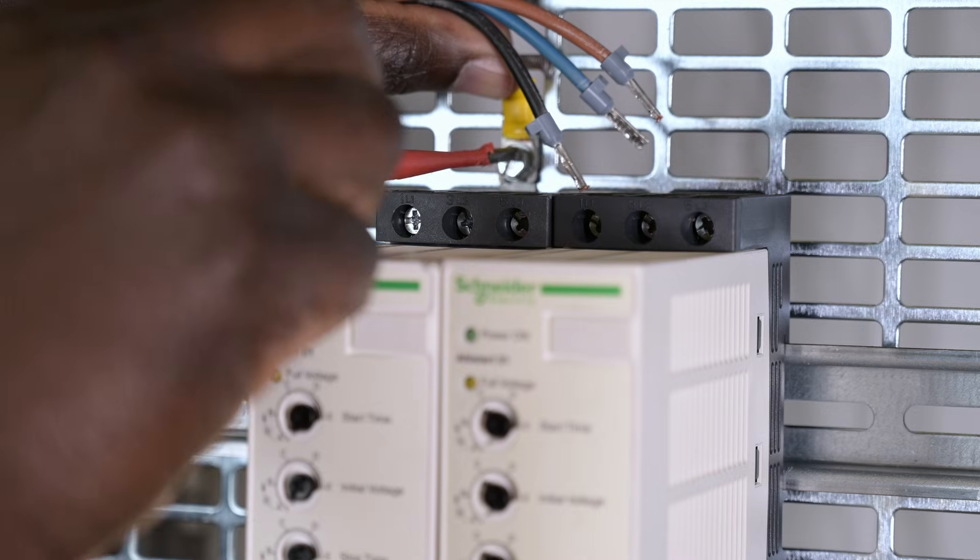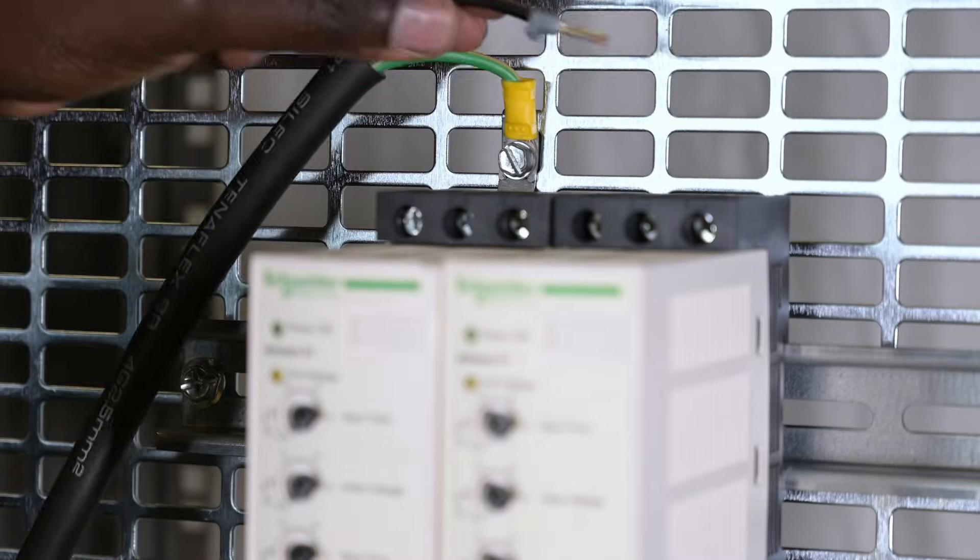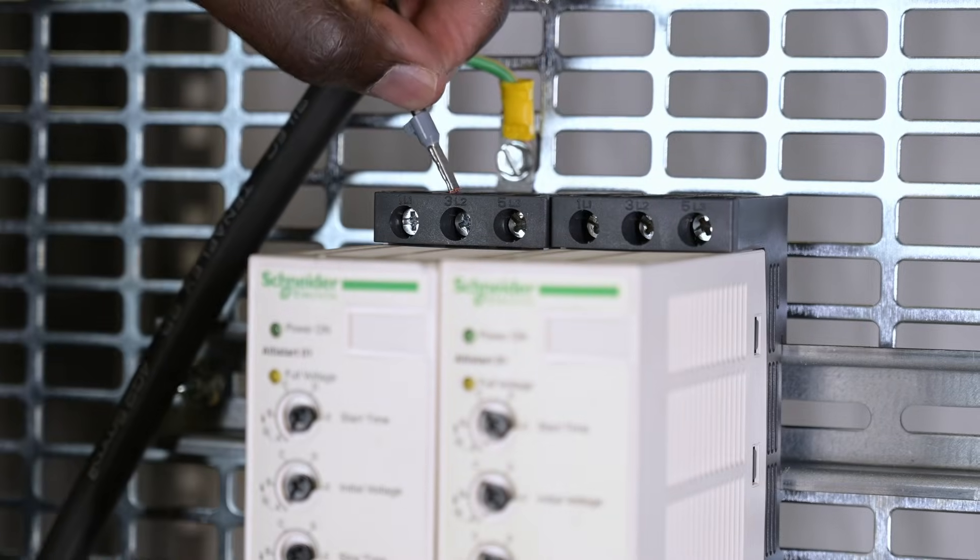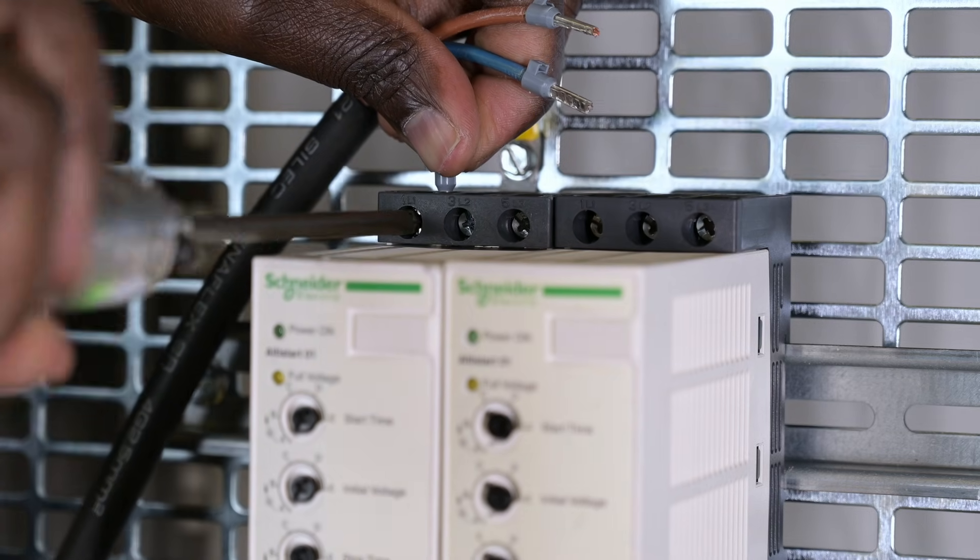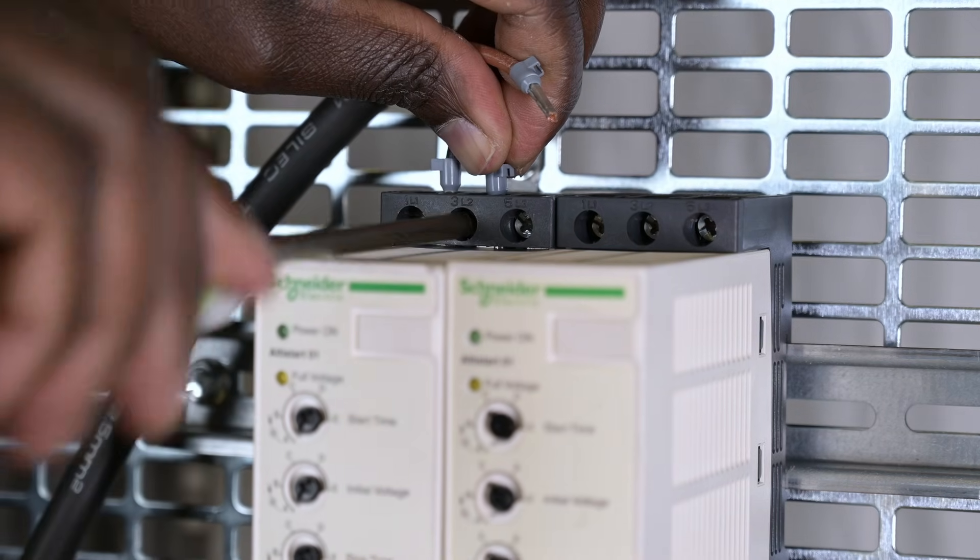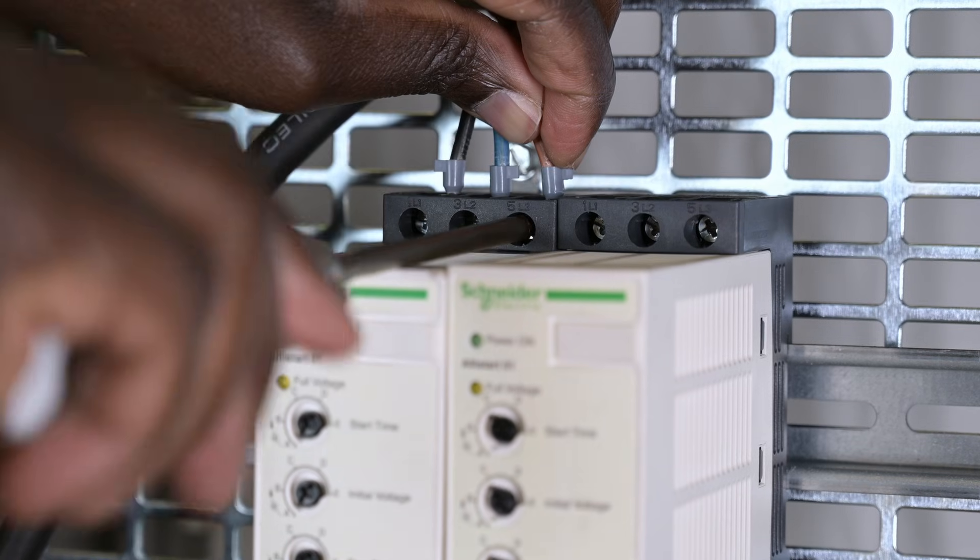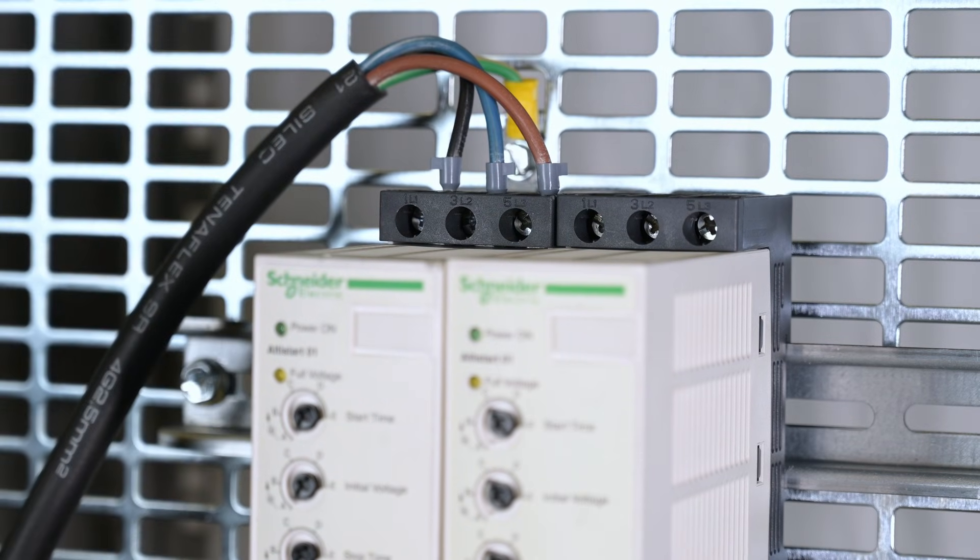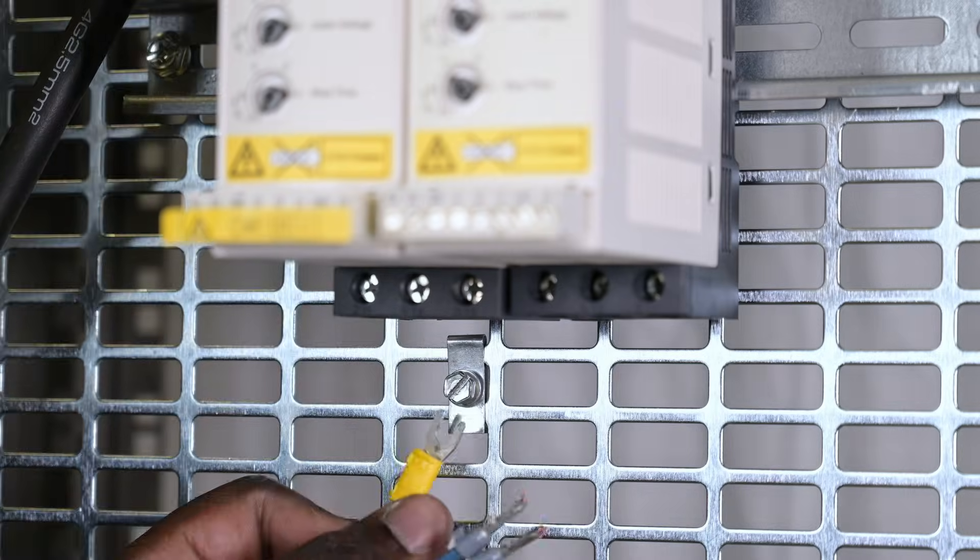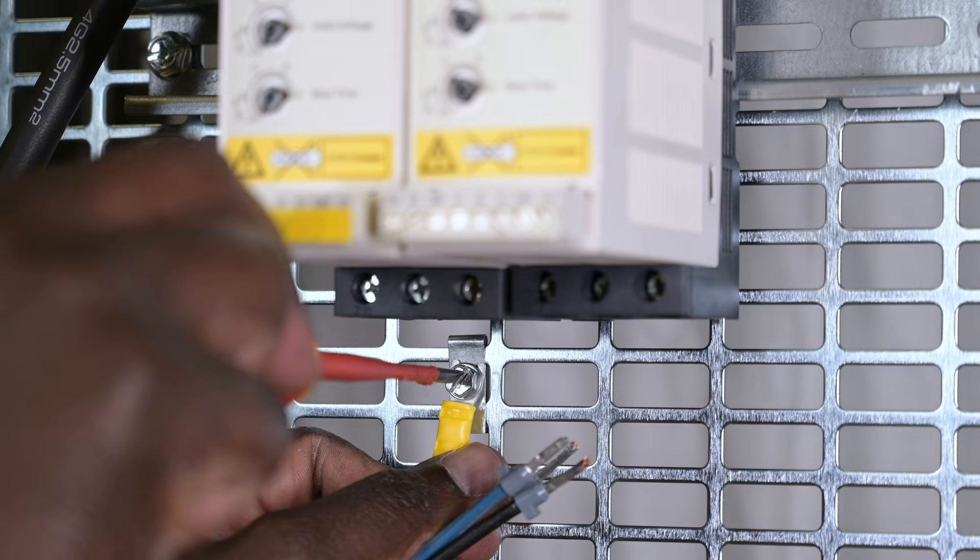The soft starter must be protected against motor short-circuit and overload. Refer to the ATS-01 instruction sheet for recommendations on cable sections, tightening torques, and wiring diagrams. Make sure the supply voltages used are in accordance with the ATS-01 specification, particularly for the control part.